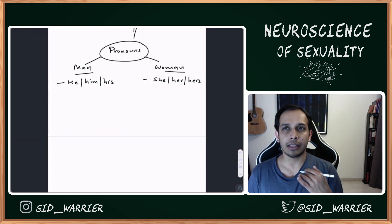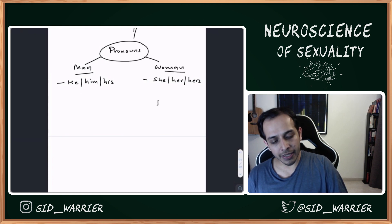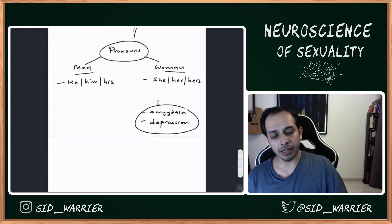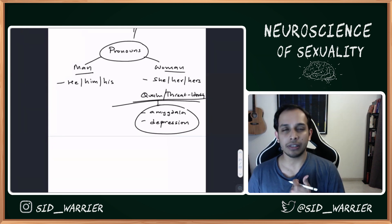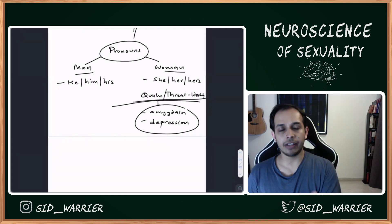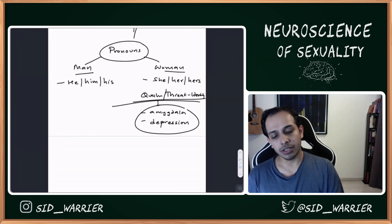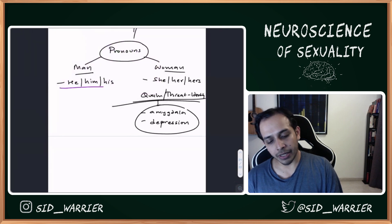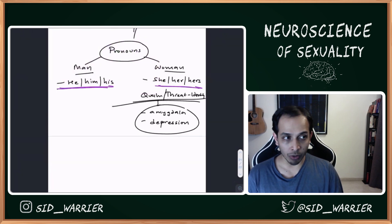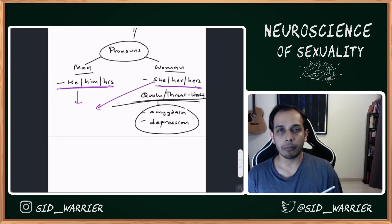If they're saying it in a way that's threatening to you, what it does is activate your amygdala and eventually lead to depression. Because anything that questions or threatens your identity is a personal threat. Every time somebody refers to someone with the wrong pronoun, it can be a personal threat.